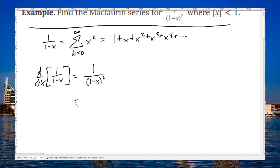But it's also equal to the derivative with respect to x of k equals 0 to infinity, x to the k. And that's simply derivative, k equals 0 to infinity, kx to the k minus 1. That's it. There's my Maclaurin series.